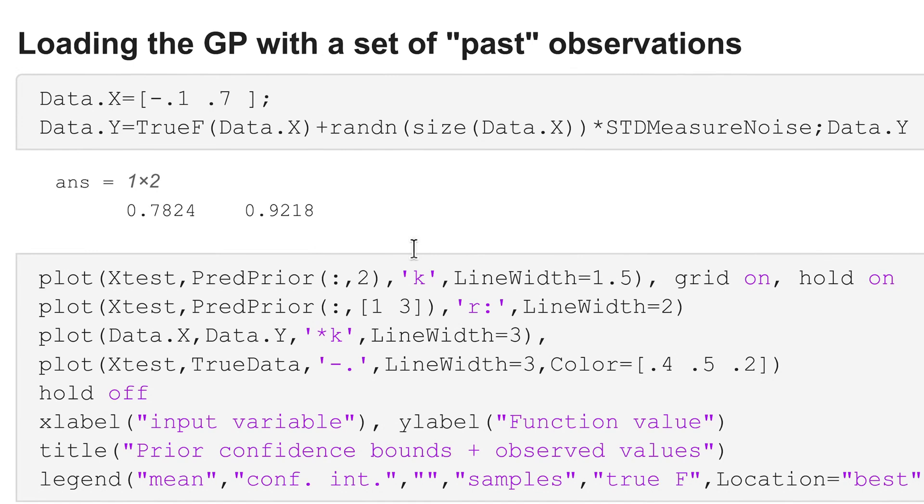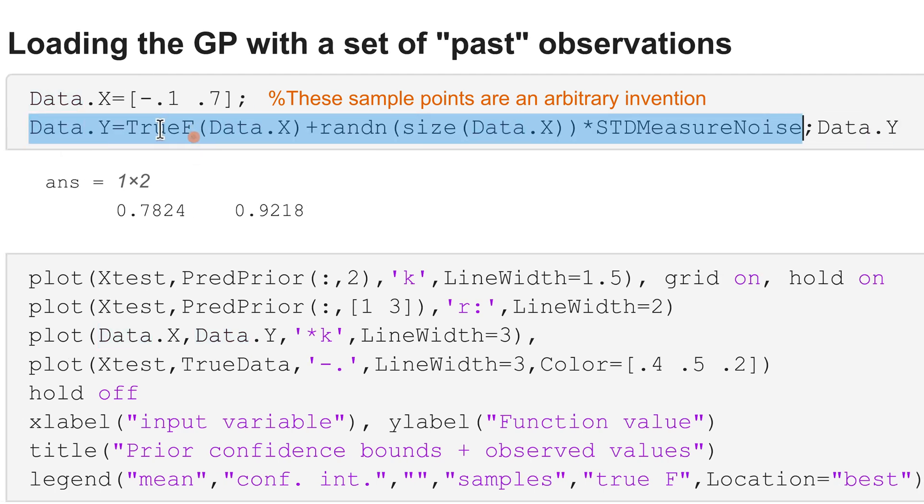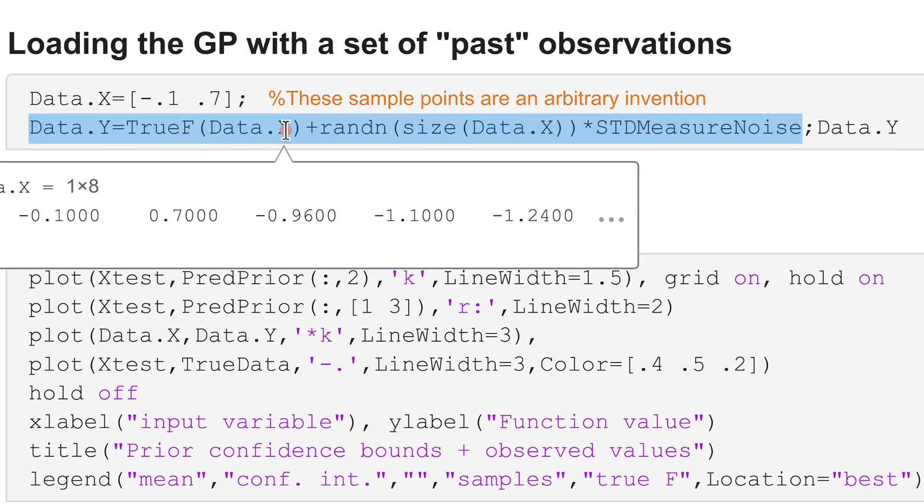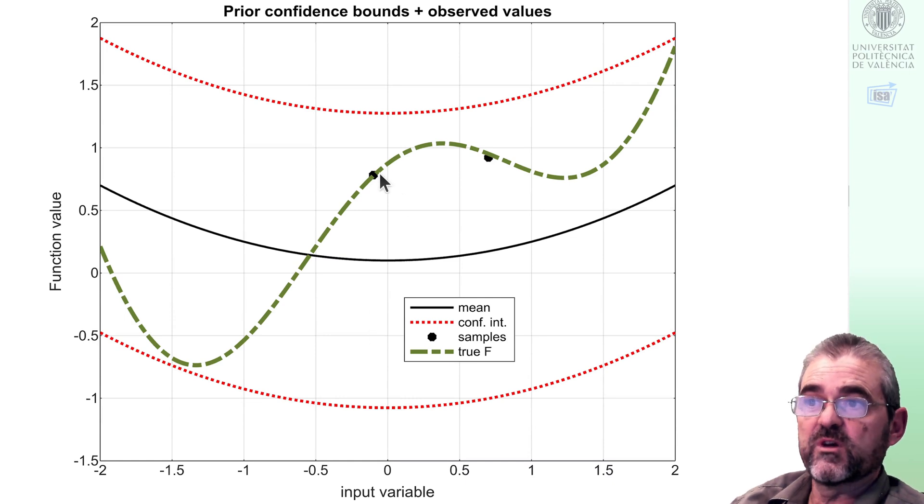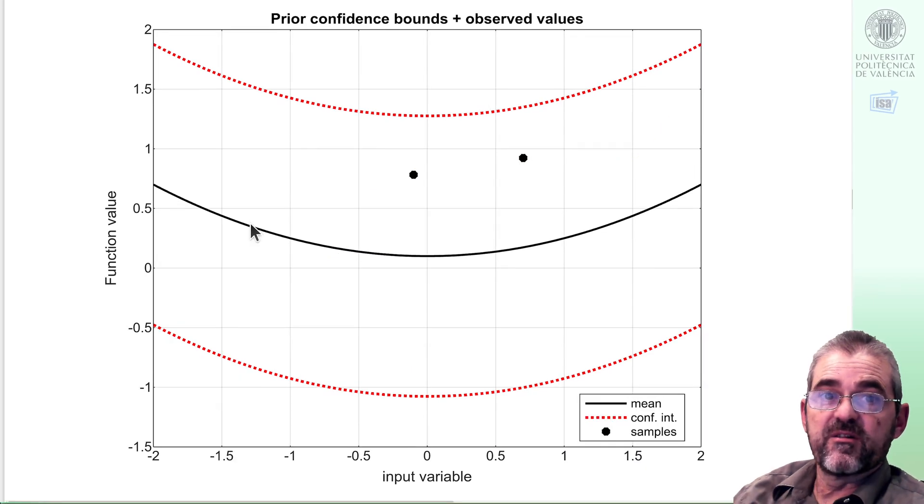We'll start by loading my prior with two previous samples, then our measurements will be the true function at those points plus normally distributed measurement noise with standard deviation 0.04. So we got these two measurements, these black dots, but of course this is the only thing known to my algorithm, we don't know the true function.